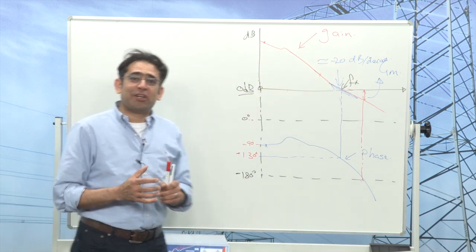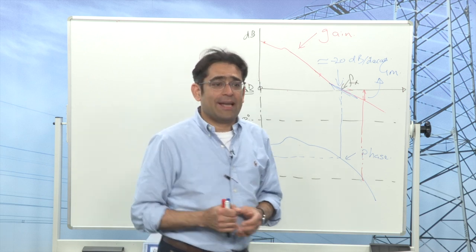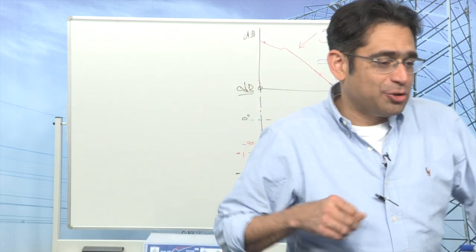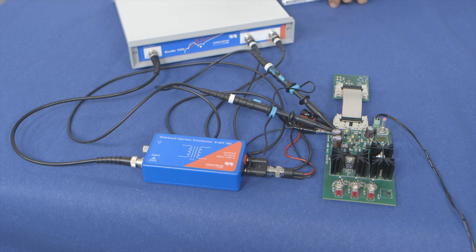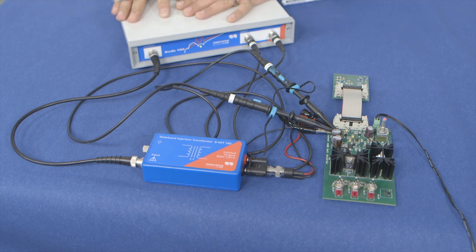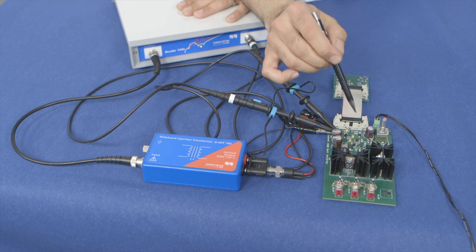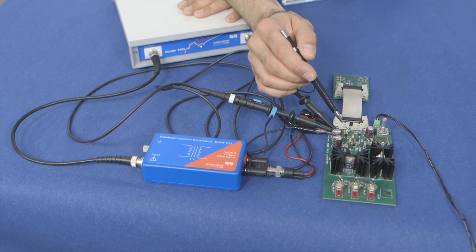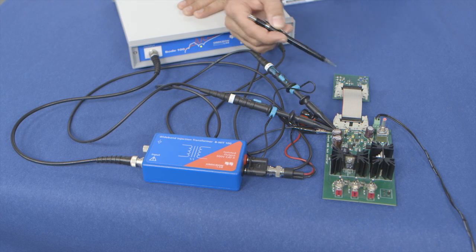We are going to make a real measurement. Here I've got a Bode 100 vector network analyzer, an injection transformer, and a standard buck converter that we use in many workshops. I have an analog voltage mode controller to control my power stage.